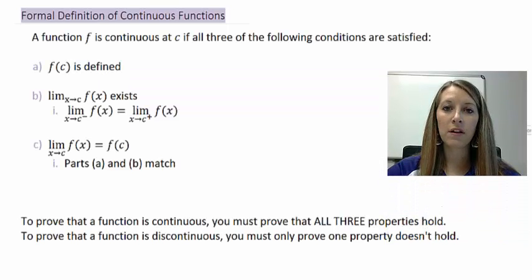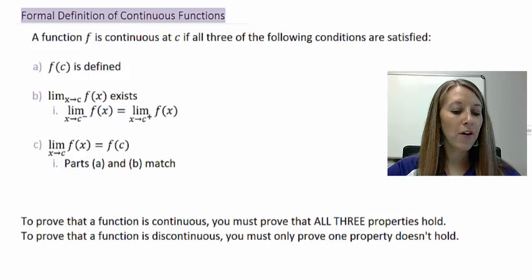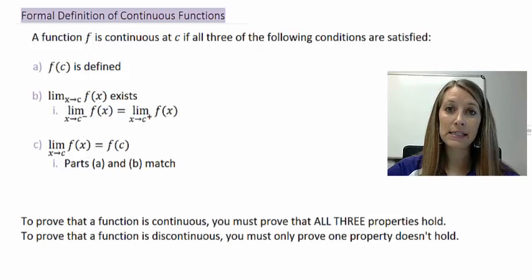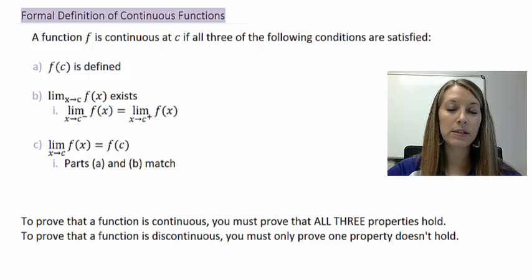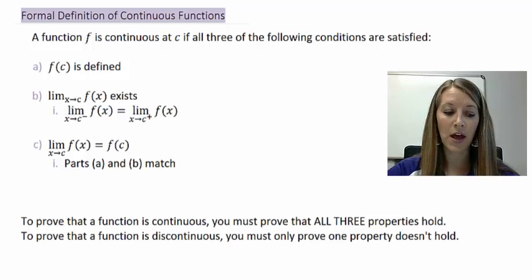This is definitely a much more intensive definition. A function f is continuous at c — that's why my visuals in the last video all used c as an x value — a function f is continuous at c if all three of the following conditions are satisfied.